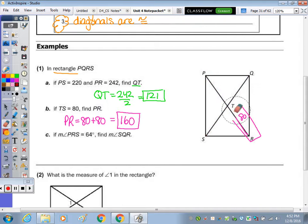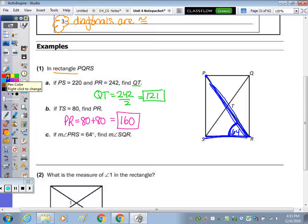Part C asks for the measure of angle SQR. First, angle PRS, which is this angle right here, is 64 degrees. Angle SQR is right here. I know that this corner is 90 degrees because every angle in a rectangle is 90 degrees. So 90 minus 64 gives us 26 degrees.